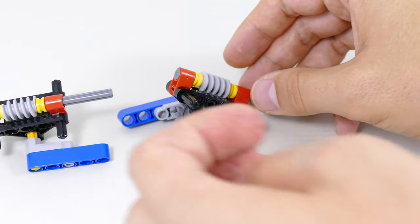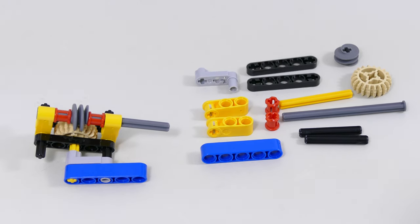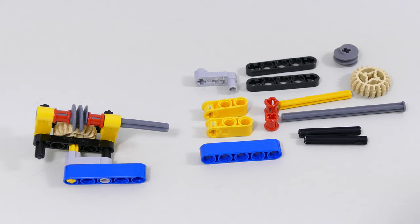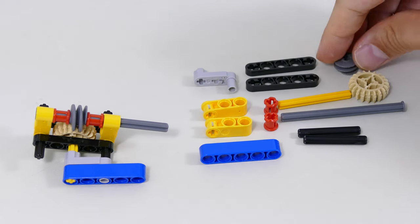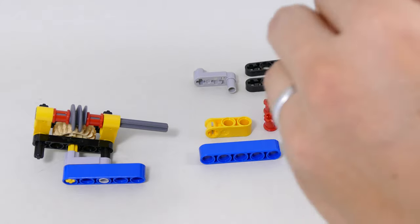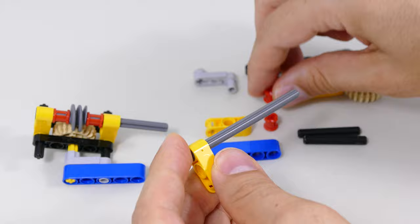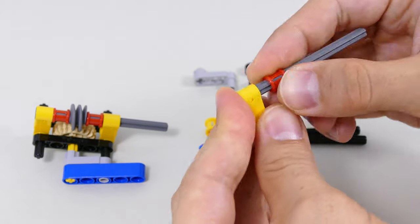The last build with worm gear is going to show you how to lock in the 20 tooth bevel gear with the new one module worm gear. This is not the only build but it's the simplest one to explain.